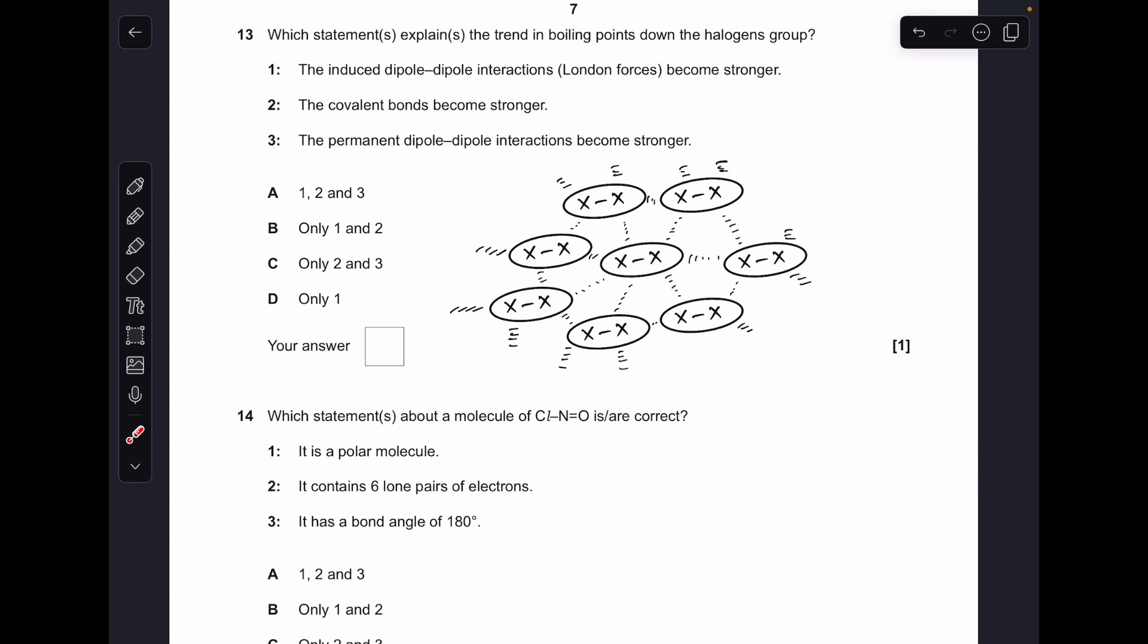Moving on to number 13. So this little diagram here is representing a diatomic halogen molecule. So when we boil this thing, we need to break these intermolecular forces between the molecules. What we're not doing is breaking this covalent bond. So we'll run through the options, see which statements are correct. So the induced dipole-dipole interactions, London forces, get stronger. Yeah, that's right, because as you go down the halogens they get more electrons and that makes these intermolecular forces stronger. Number two, absolutely nothing to do with the strength of the covalent bonds, so that's wrong. The permanent dipole-dipole interactions get stronger. That's wrong as well because these are non-polar molecules.